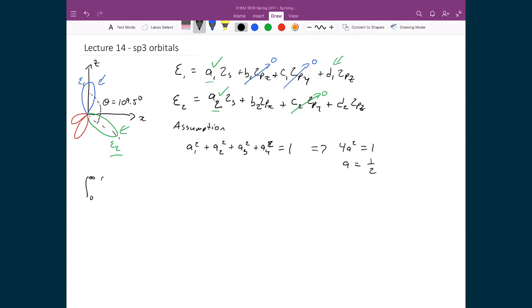Integral from 0 to infinity, 0 to π, 0 to 2π. We're going to have ξ1 times ξ1 times r squared, sin θ, dr dθ dφ. And that's equal to 1.